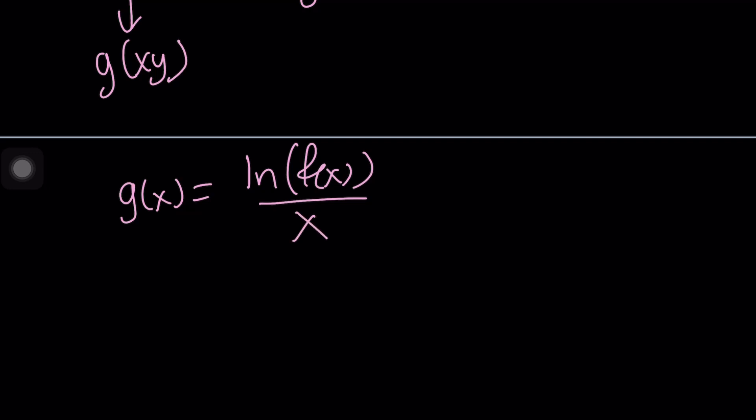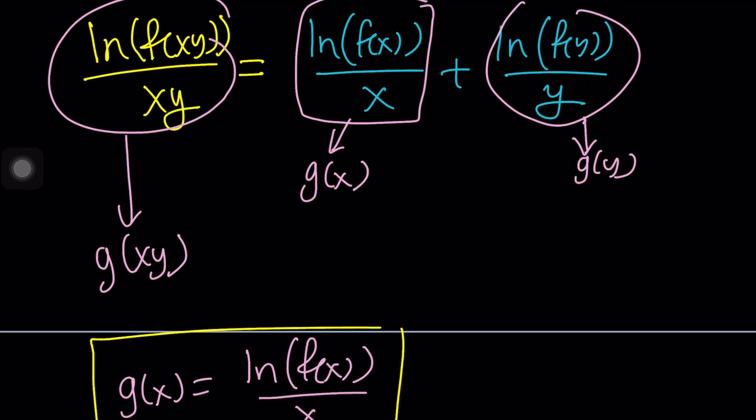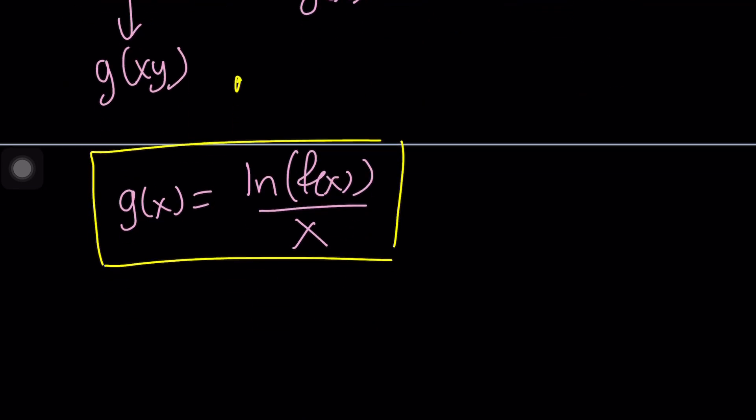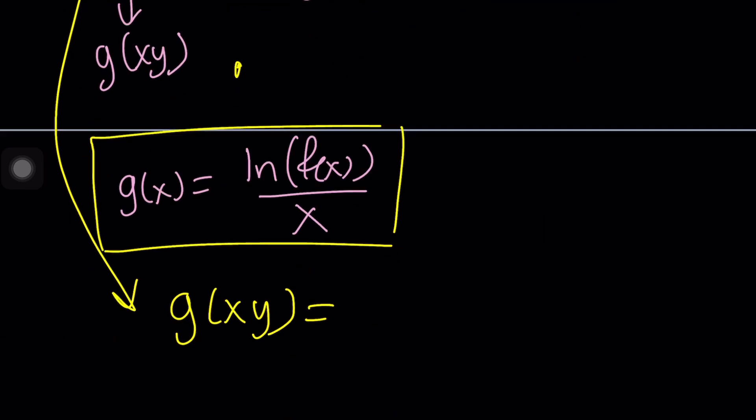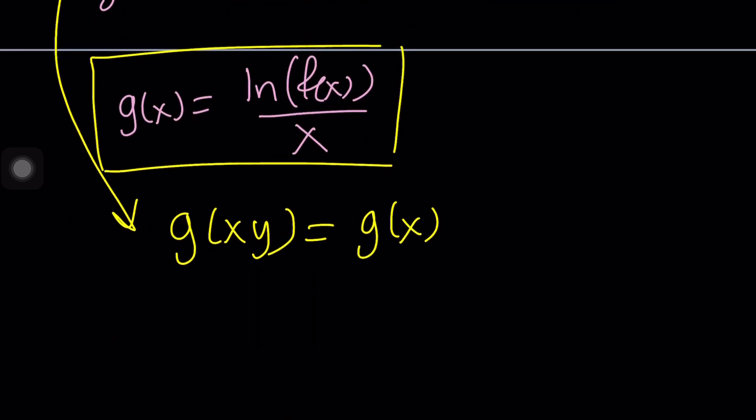Because if you think about it, if g of x is ln f of x over x, then replacing x with y is going to produce g of y, which is ln f of y over y. And replacing x with xy is going to produce ln f of xy divided by xy. Make sense? So, all the same pattern everywhere. So, now we can go ahead and make the substitution. Let's go ahead and rewrite it. g of x equals ln f of x divided by x. Awesome. Now, we kind of turned it into an easier problem by making the substitution because now our g is actually a lot simpler.